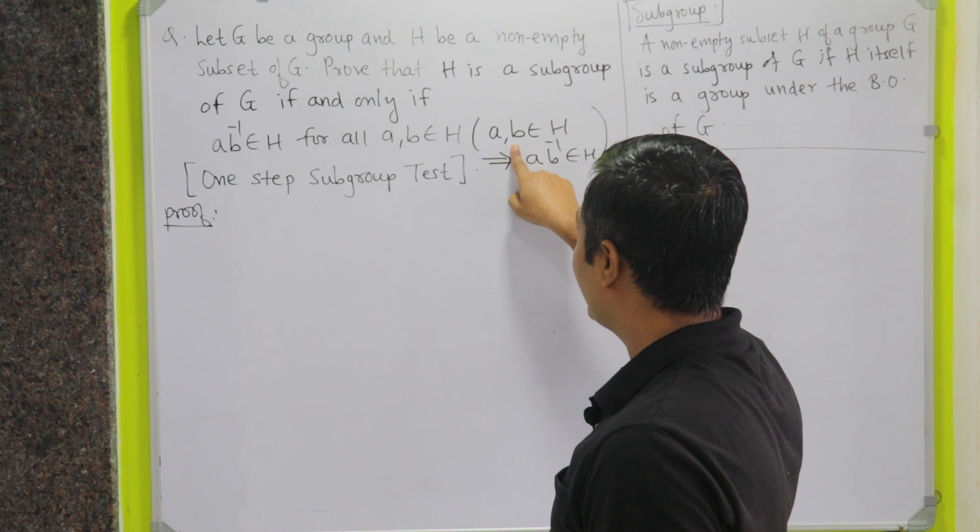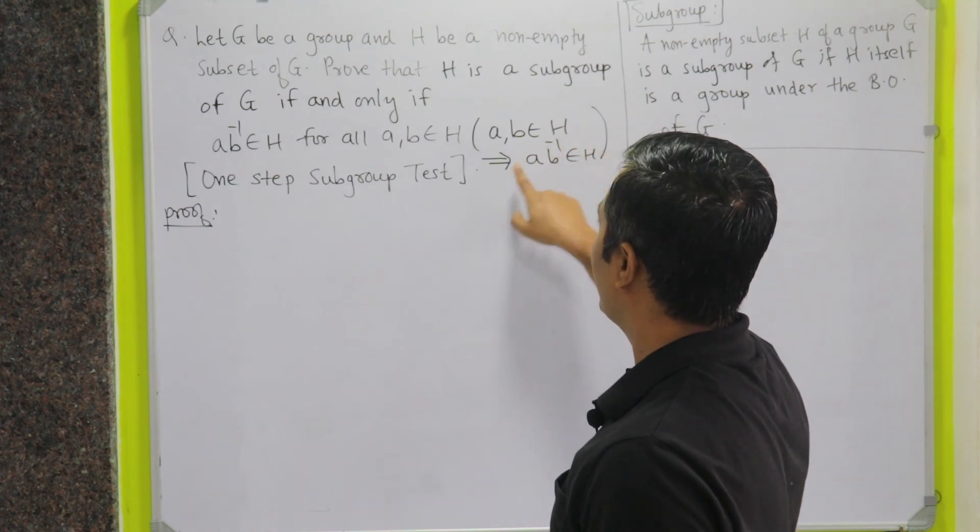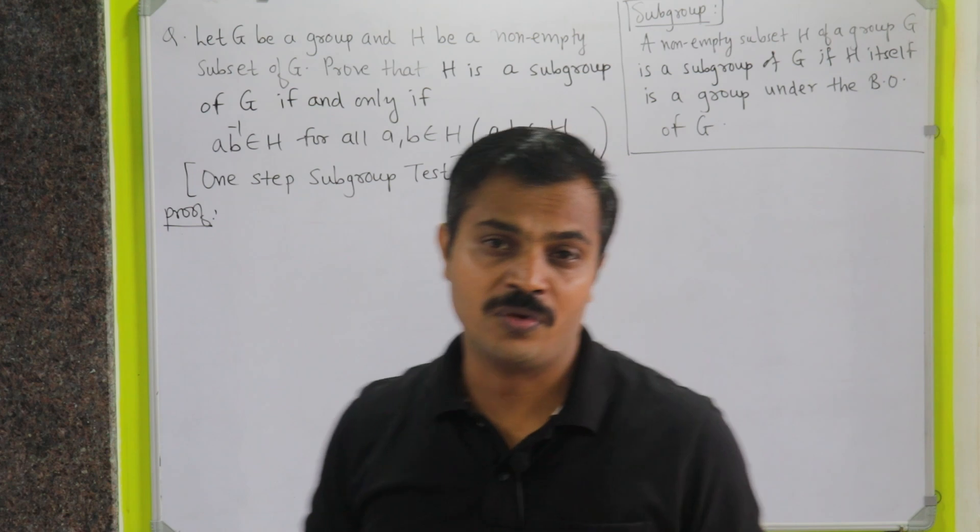Meaning, you take any two elements of H and you should be able to prove AB inverse belongs to H.